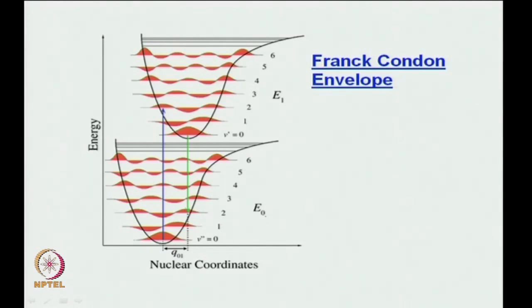Between the ground state E0 and the excited state E1, the way the higher potential energy surface is shifted determines which transition is the most intense. In this case, the 0-to-2 transition would be the most intense for absorption. This is your absorption. Now, if it goes up it will also come down — either by emitting photons (radiative transition) or not emitting photons (radiationless). Either way, the coming down will be very similar to the way it went up, because the Franck-Condon transition is vertical in both directions since you are dealing with the movement of electrons.